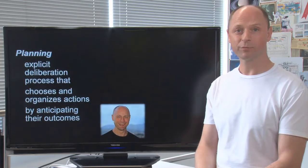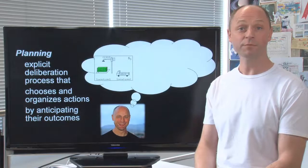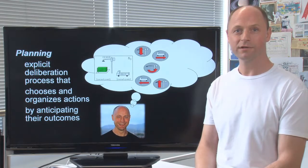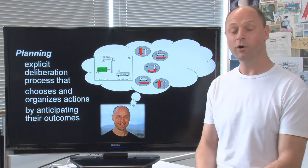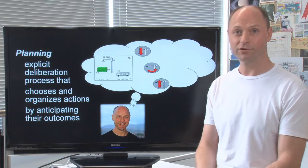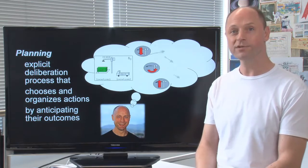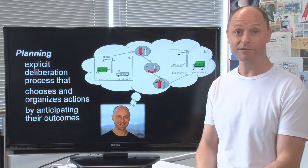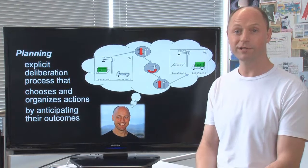Planning is an explicit deliberation process. In this process, from all possible options, we chose those actions we need to perform, and we organize these actions into a structure called a plan. We do so by anticipating the outcome of the actions. AI planning is the computational study of this whole deliberation process.